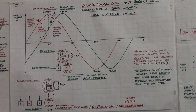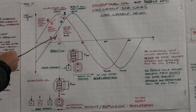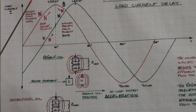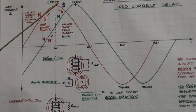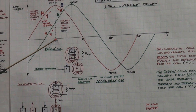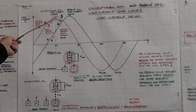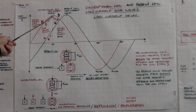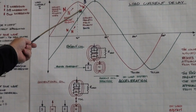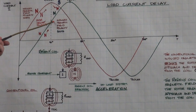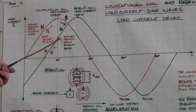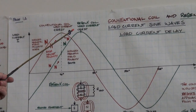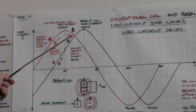The Regen-X coil's load current delay also produces a north pole up to the crest point. But beyond the crest of the conventional coil, the rotor magnet is moving away — yet the Regen-X coil is still producing a north pole repelling magnetic field, which is assisting the rotor magnet's departure and accelerating it.